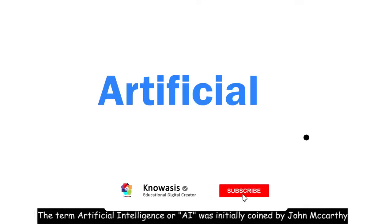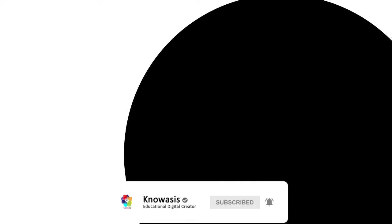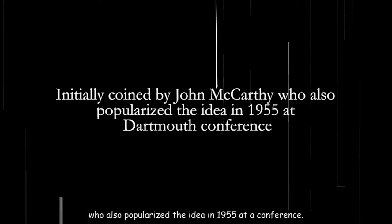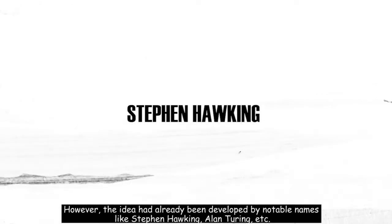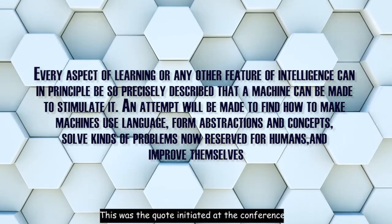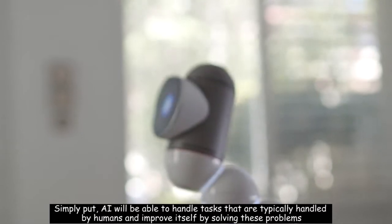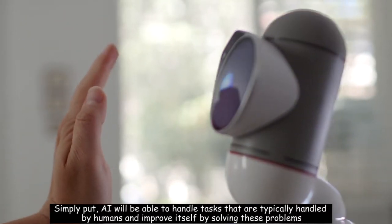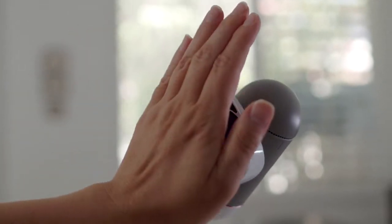The term artificial intelligence or AI was initially coined by John McCarthy, who also popularized the idea in 1955 at the conference. However, the idea had already been developed by notable names like Stephen Hawking, Alan Turing, and many others. Simply put, artificial intelligence will be able to handle tasks that are typically handled by humans and improve itself by solving these problems.